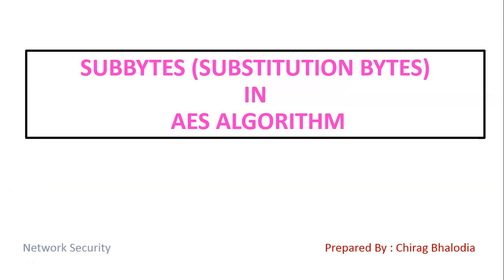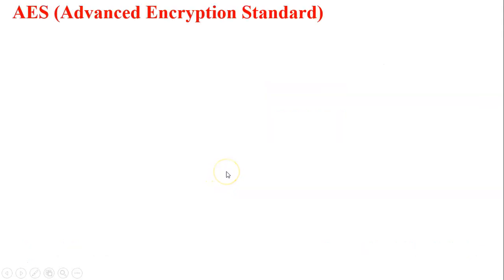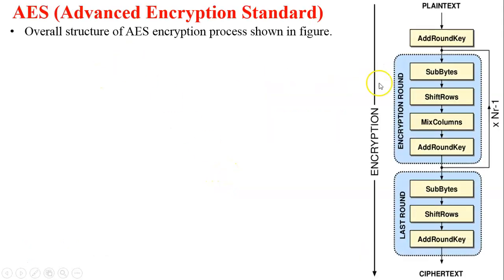Hello friends, myself Chirak. In this video I am going to discuss SubBytes, or the substitution bytes process of the AES algorithm — a topic of network security. In this figure you can see the encryption process of the AES algorithm: plaintext goes through Add Round Key, then encryption rounds are performed, generating the ciphertext.